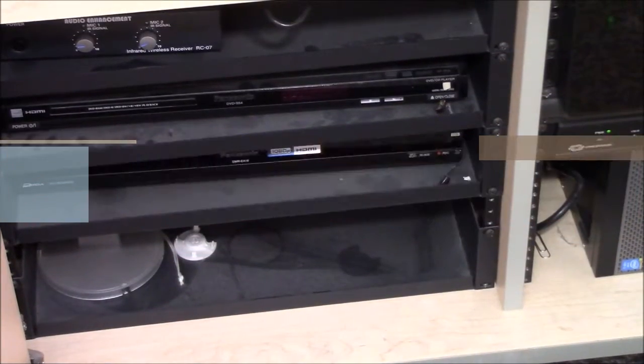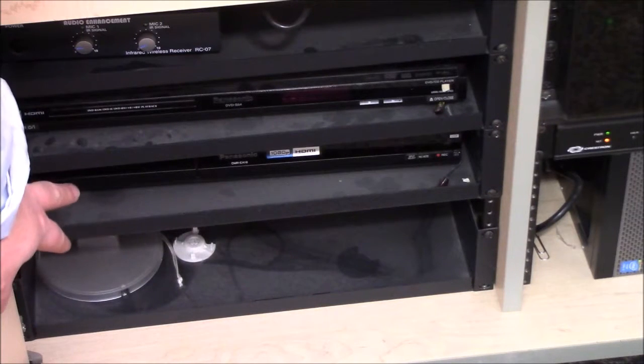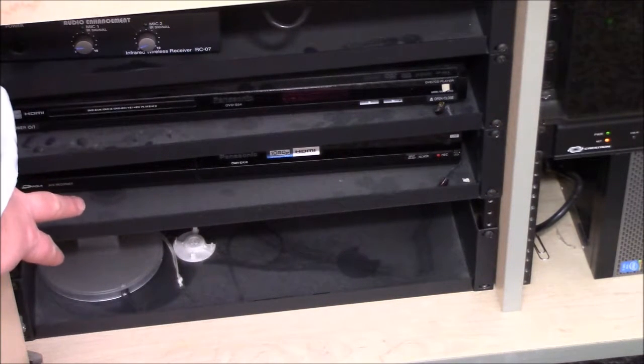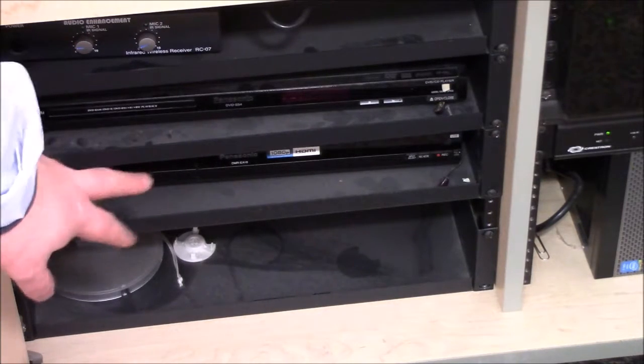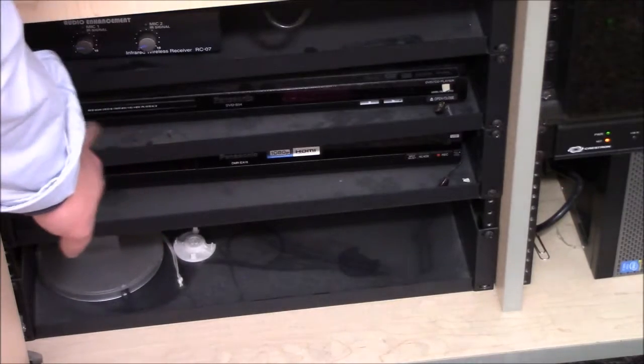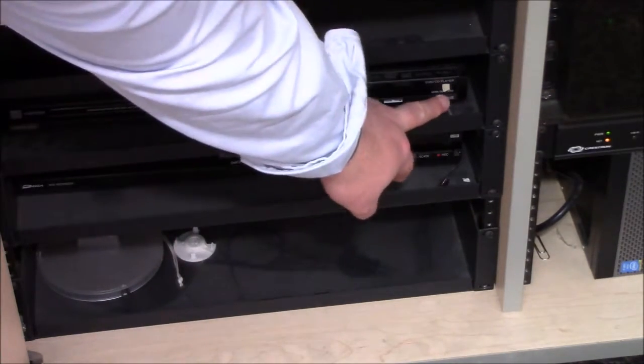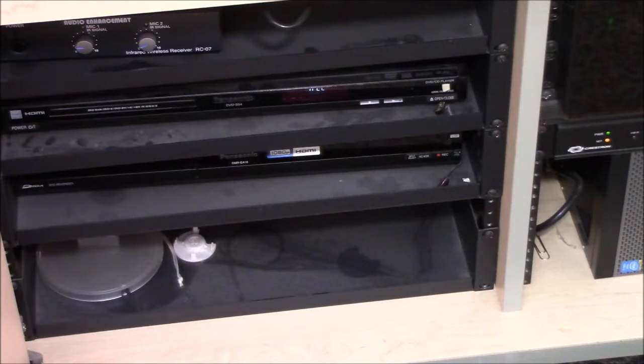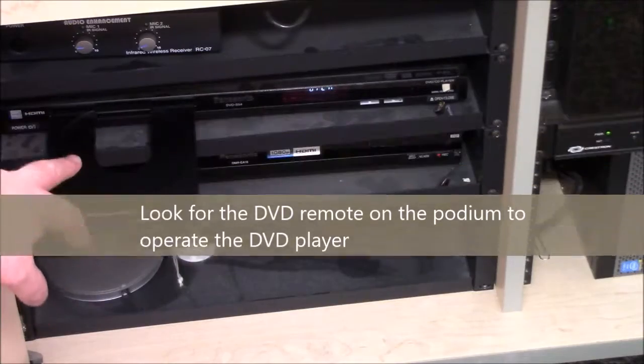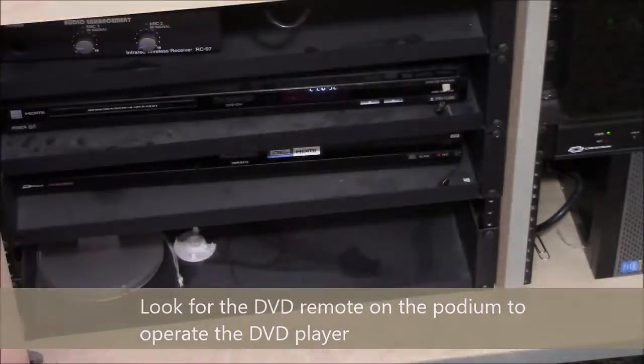Then what I'll need to do is look, open up my doors and my instructor podium and look for the DVD player. Usually we will go with Sony or Panasonic. If you're looking for a name, but it should say something about DVD on it. In this case, it's a Panasonic one. So to open that up, to put my DVD in, I'd hit the open and close and it'll think about it. And then it will open up a drawer. I can put my DVD in and say, open and close and go to town.